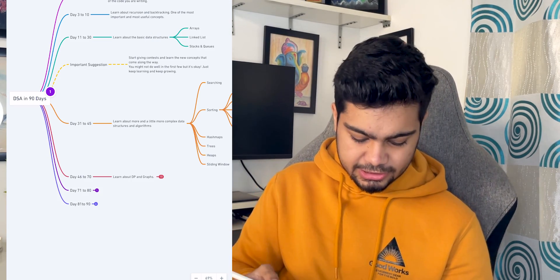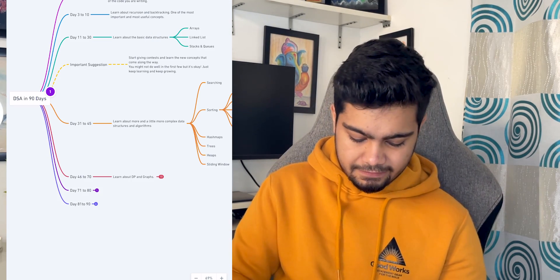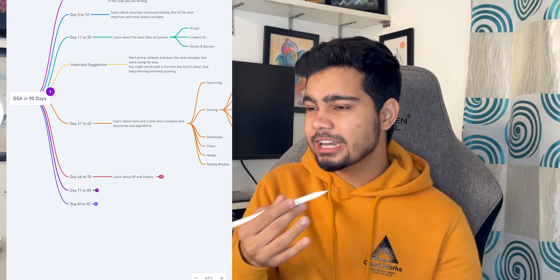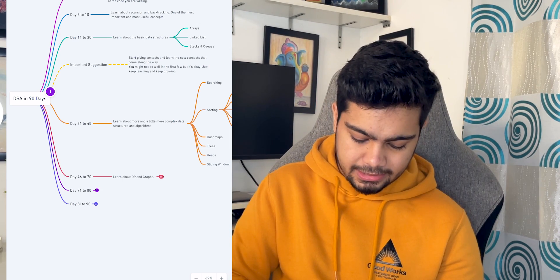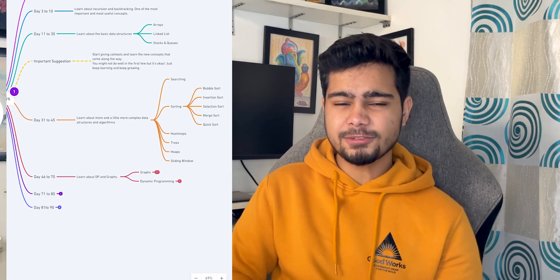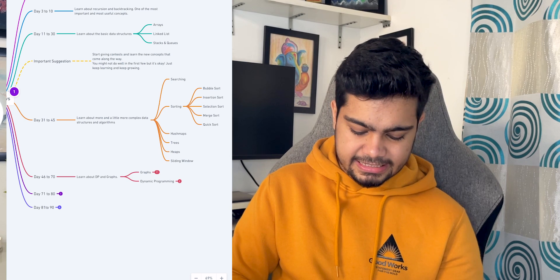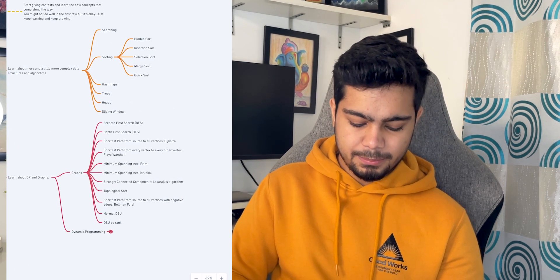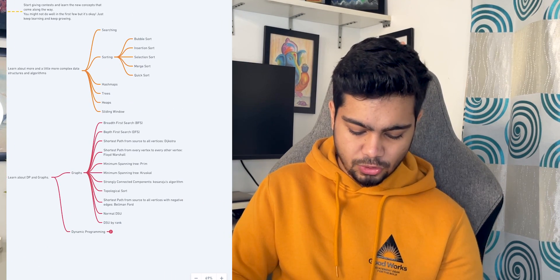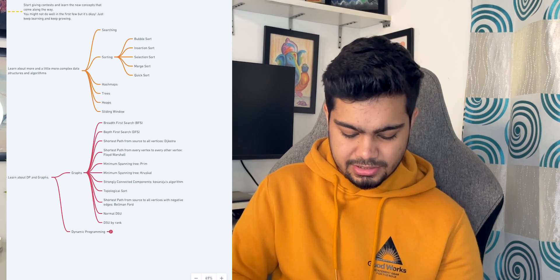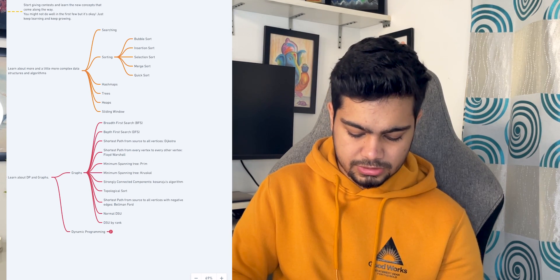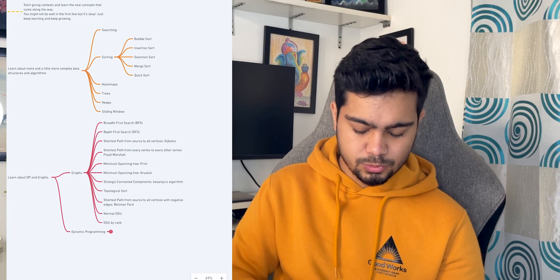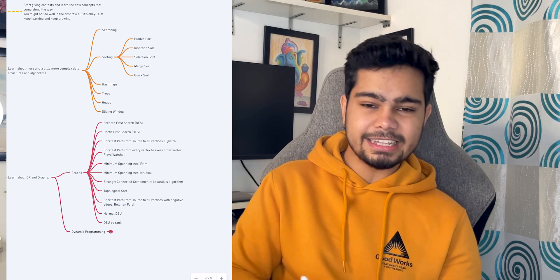Day 46 to 75 — 25 days — you have to study the most important topics for every online test: Graphs and Dynamic Programming. For Graphs, you need to study BFS, DFS, shortest path algorithms, Dijkstra, Floyd-Warshall, Prim's, Kruskal's, Topological Sort, Bellman-Ford, DSU (Disjoint Set Union), and DSU by Rank.